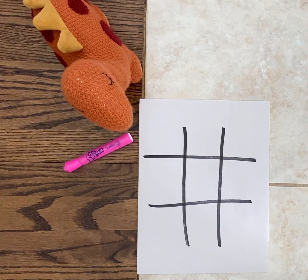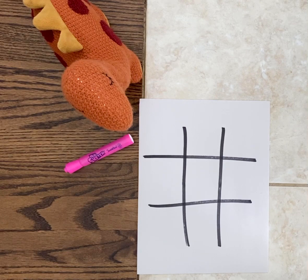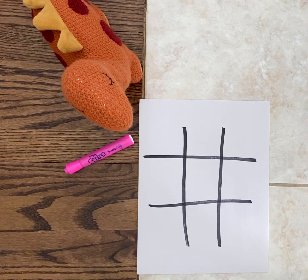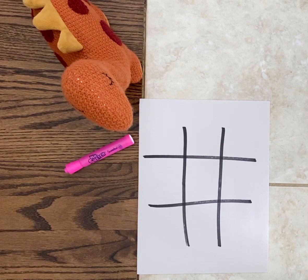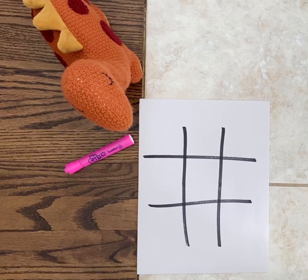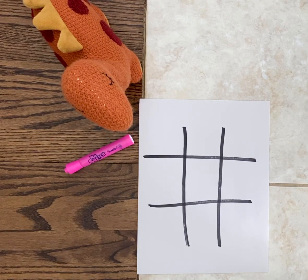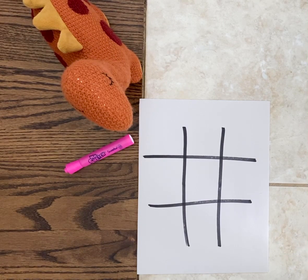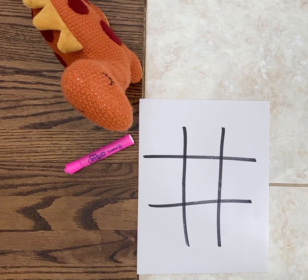We can go ahead and play rock paper scissors or whatever we want to decide who will go first. But once we know who's going first, this is going to be played just like a regular game of tic-tac-toe except with addition facts. So I'm trying to get three facts in a row that equal the same answer.